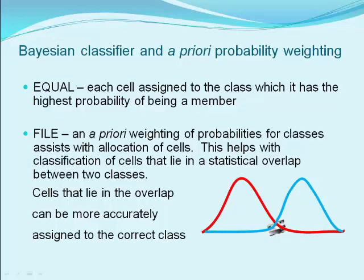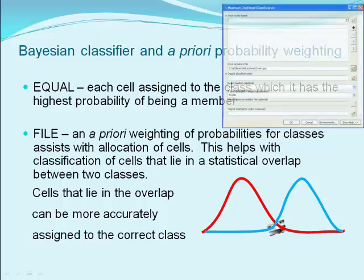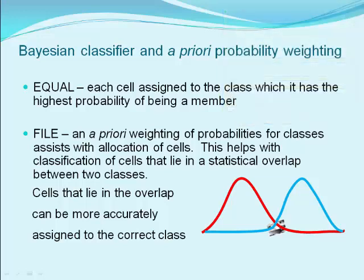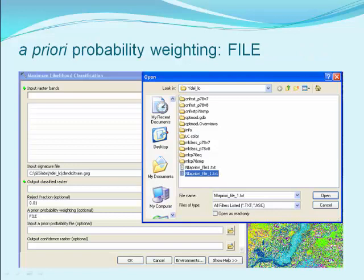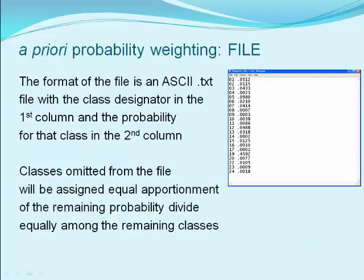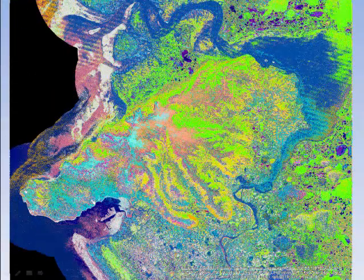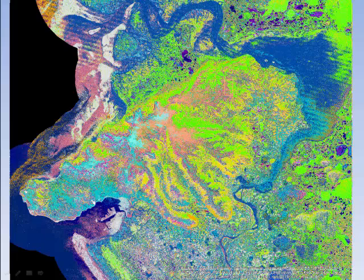The greatest challenge in classification is for those cells that lie between categories. The MLC tool uses a Bayesian classifier to assign weights to classes. In the map that we just viewed, all classes were assigned equal probability. We can change this and weight the classes differently by specifying a file in the menu entry for a priori probability weighting. We will use an ASCII text file with the class designators in the first column and probabilities in a second column. Here's a file with the probabilities for each cover class. Our new classification scheme has resulted in a sharper map with a clear delineation of cover classes in some areas.